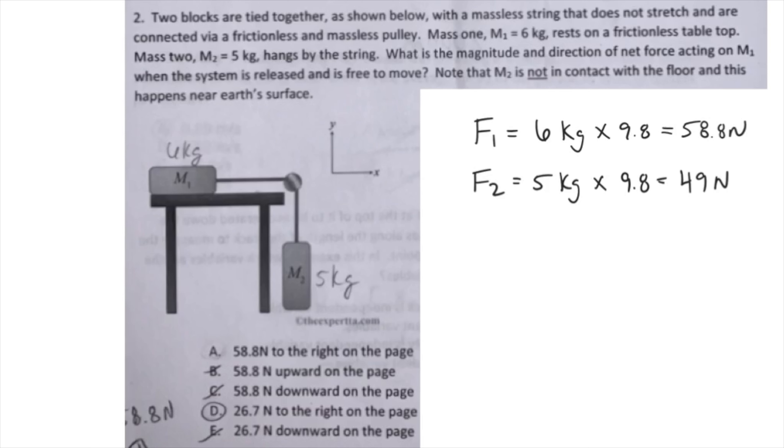Now if you look at our calculations, A suggests that the force M1 moves to the right with is 58.8 Newtons. However, we know this can't be true because 58.8 Newtons is equal to F1, or the normal force that M1 is putting down on the table. Therefore, D is the only choice that we have left, 26.7 Newtons to the right on the page.